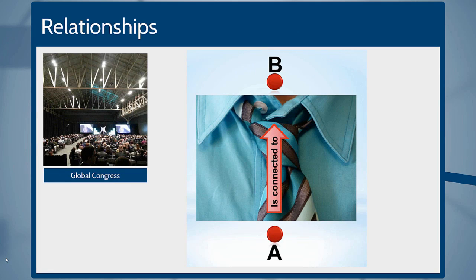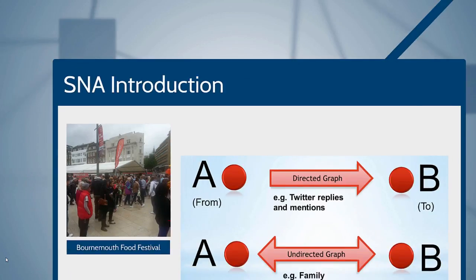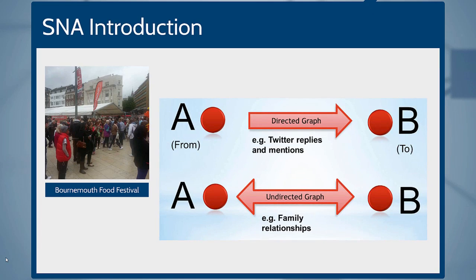The fundamental building block of social network analysis and social networks are relationships. A is connected to B in some way — it's tied to B in some way. Those ties can take two forms. That tie can be directed, where A has a directed relationship to B. So, in a Twitter reply, for example, if you're replying to X, there's a 'from' — you — and there's a 'to' — X, or B.